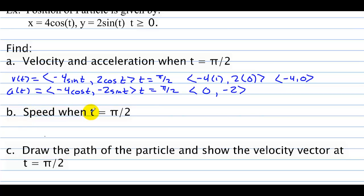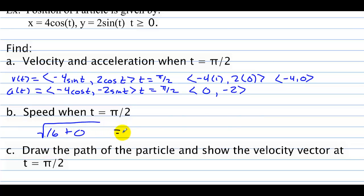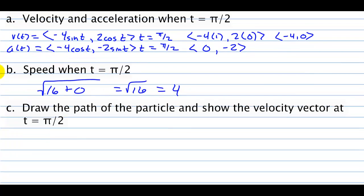What is the speed when t = π/2? Speed is the magnitude of the velocity vector. That's the square root of 16 + 0 = square root of 16 = 4. So the speed of the particle when t = π/2 is 4.